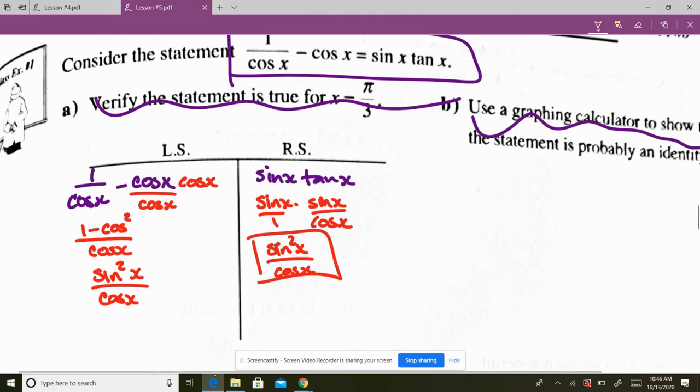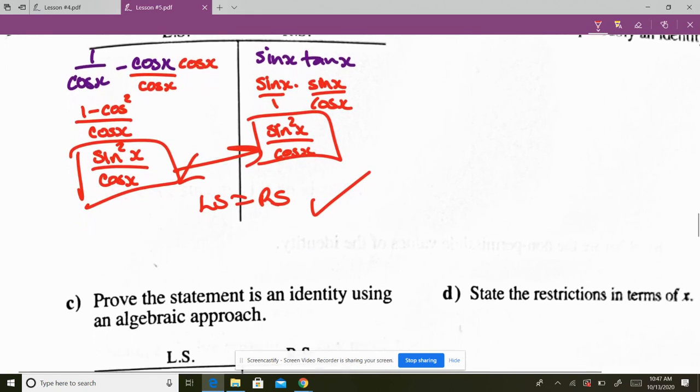So it's just sine squared x over cos x. Left side equals the right side. And you're done. You have proved that that is an identity or it's true. That's what you want to do. You manipulate one side until you can't go any further, and then you manipulate the other side if you need to.